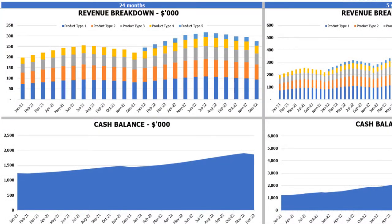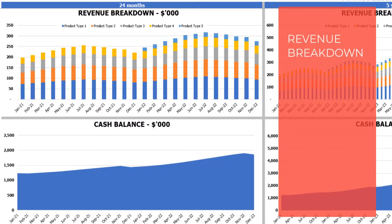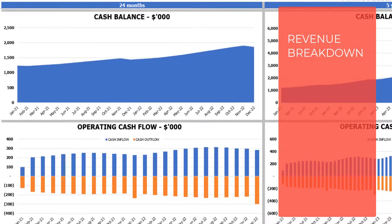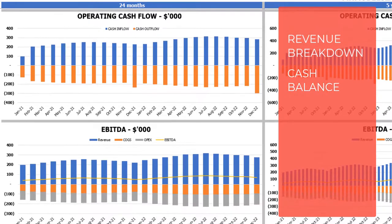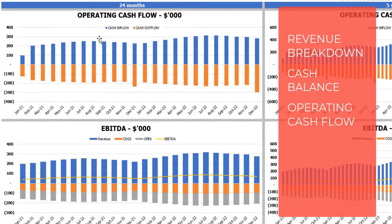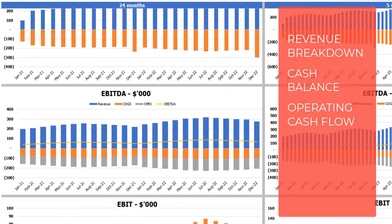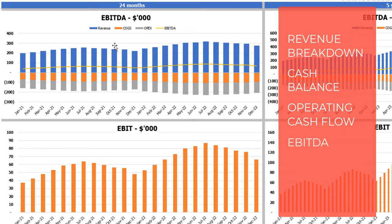On the financial charts tab you may see the main financial outputs in graphical form. On the left side you may see charts for 24 months, and on the right side charts for five years or 60 months. The top charts show revenue breakdown by product types. The next charts show cash balance for two years and five years. Below that, operating cash flow broken down by cash inflow and outflow. The next charts show the EBITDA breakdown — revenue, COGS, and OPEX — with a yellow line showing the resulting EBITDA value by month.